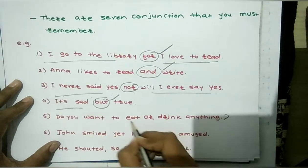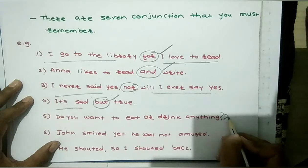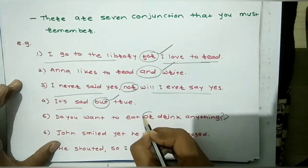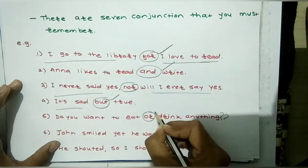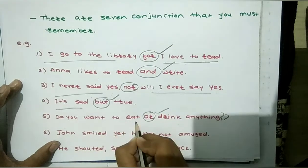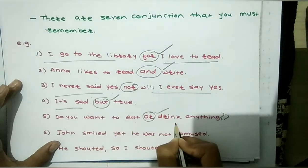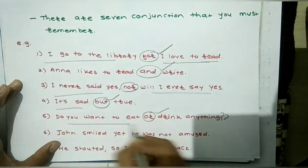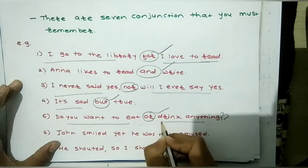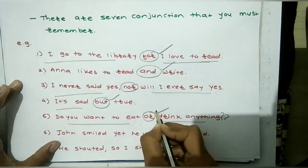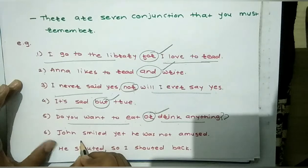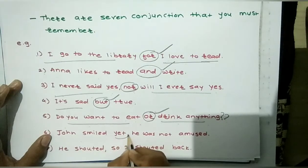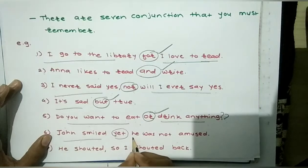'Do you want to eat or drink anything?' Here 'or' presents two choices — eat or drink. So 'or' is a conjunction connecting two options. A conjunction joins two words or two sentences together to make one complete sentence.